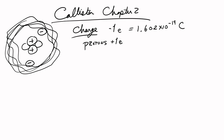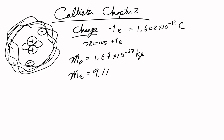The protons and neutrons which hang out in the nucleus are much more massive than electrons. The mass of the proton is 1.67 times 10 to the negative 27 kilogram, which may sound small, but that's four orders of magnitude larger than the mass of the electron, which is 9.11 times 10 to the minus 31 kilogram.